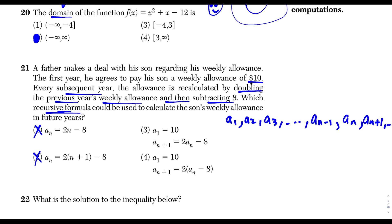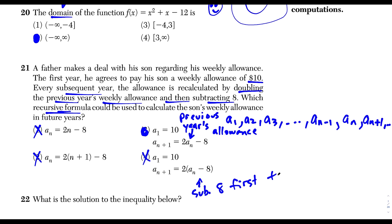Choice 4 subtracts 8 first and then doubles — that would be correct if the problem said subtract 8 then double, but the problem says double first then subtract 8. So choice 3 is correct. The first term is a sub 1 equals 10.